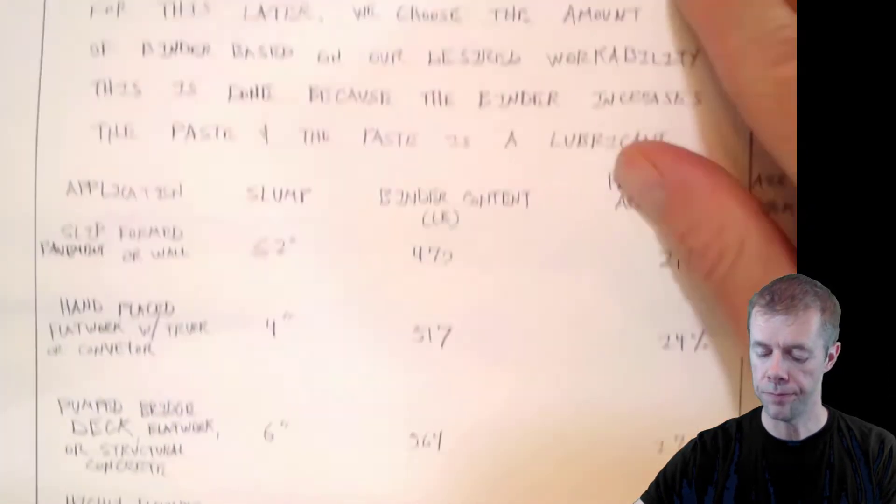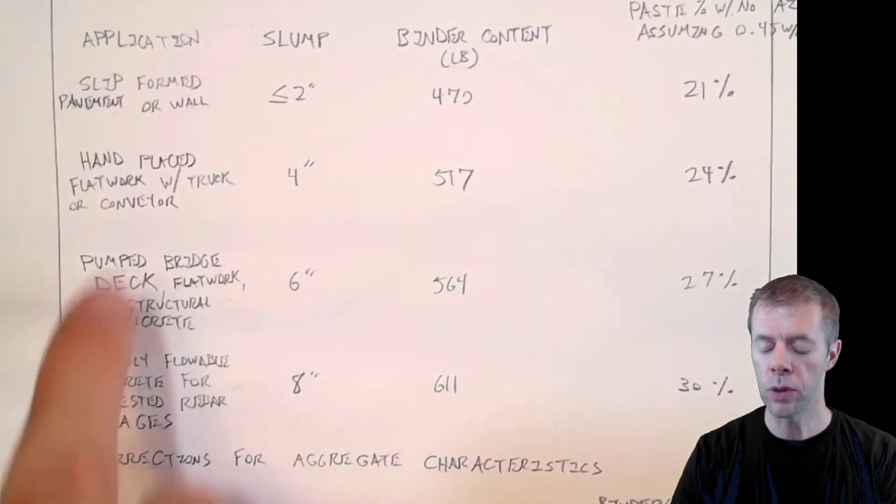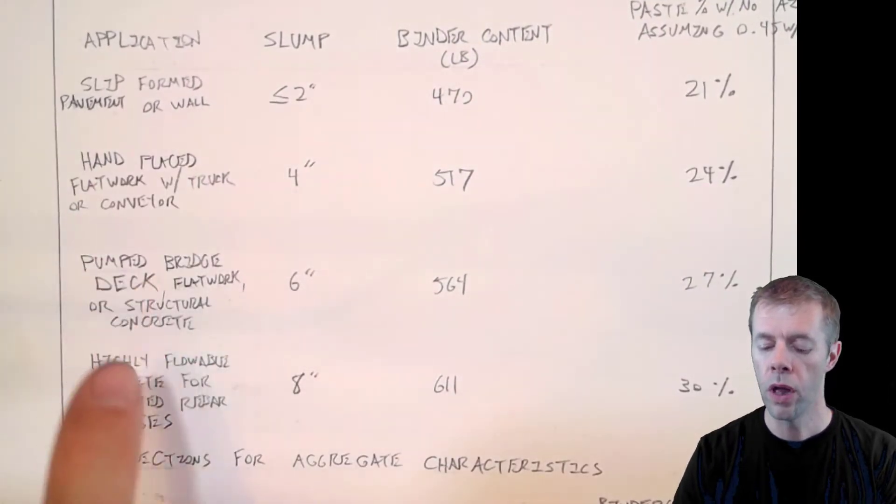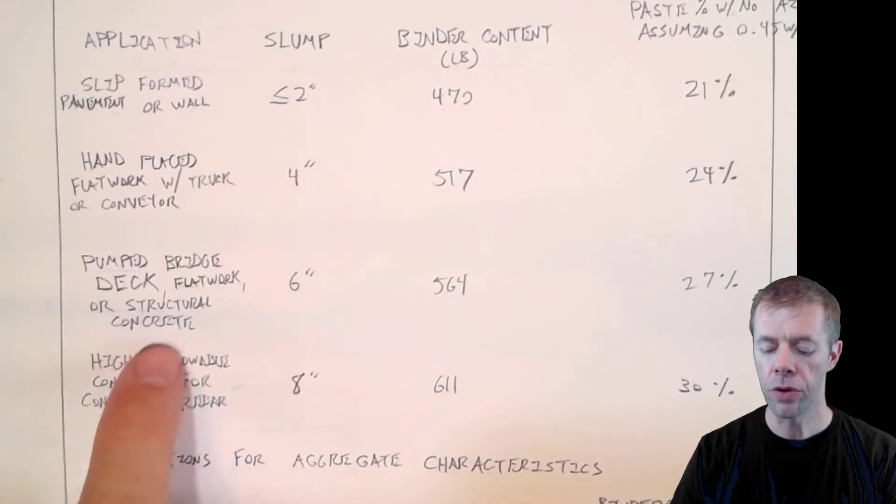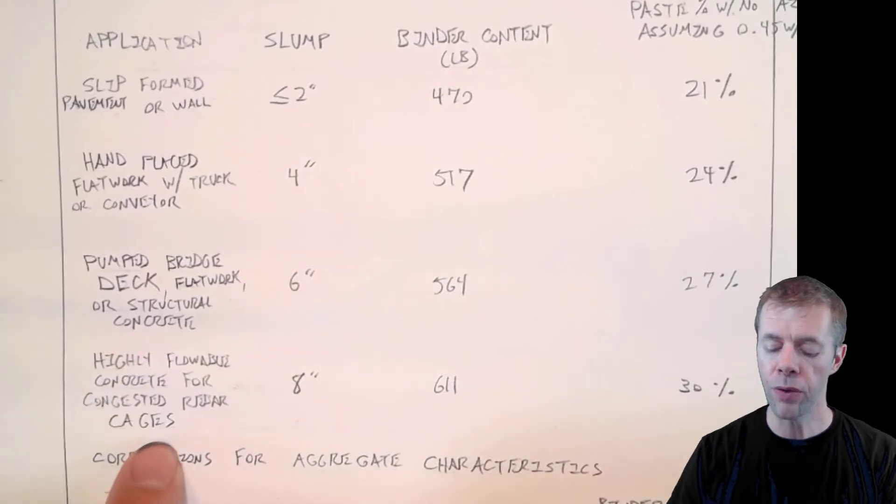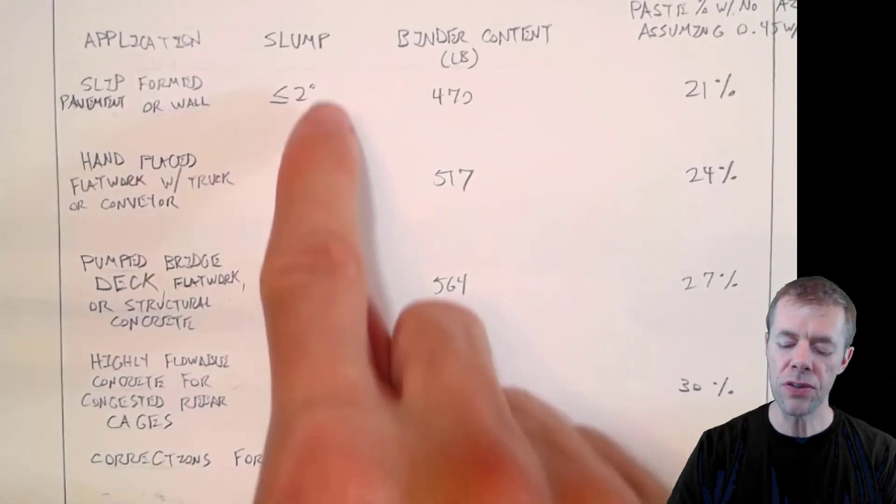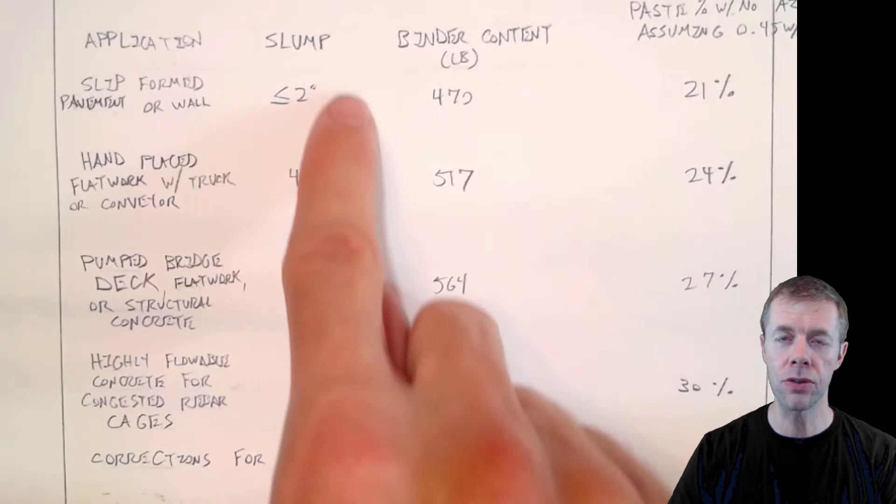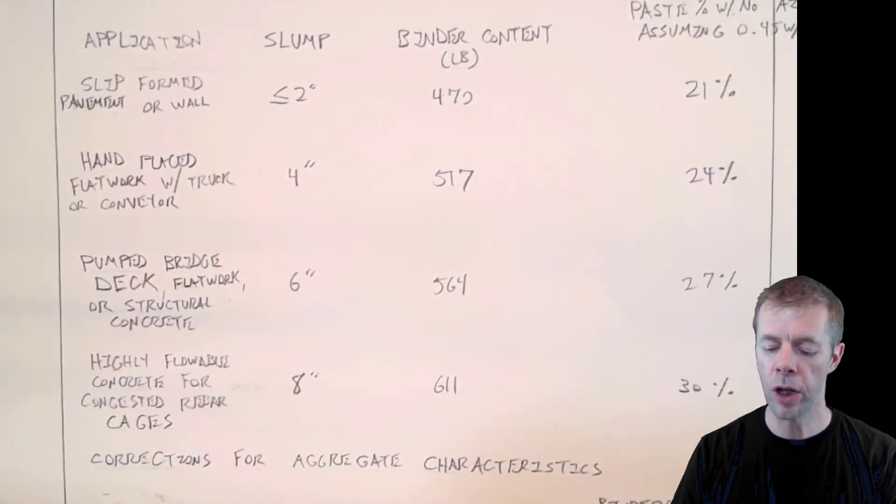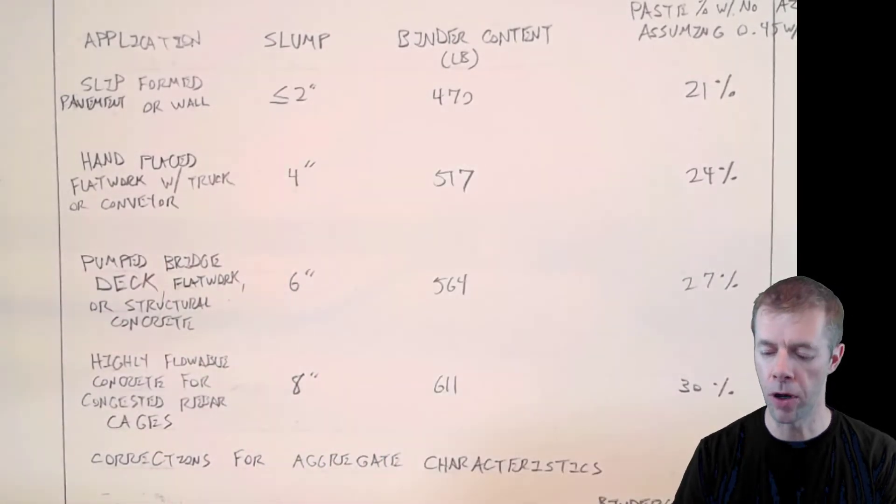And this table is going to help you do that. This table is set up so that you have your application you're doing, whether it's slip form pavement or a wall, whether you're doing hand placed, whether you're pumping the concrete for a deck or flat work or some kind of other structural concrete, whether you're dealing with highly flowable concrete for congested rebar cages. This will tell you the application. This is the slump. If you like to talk in slump, this chart helps you do that.